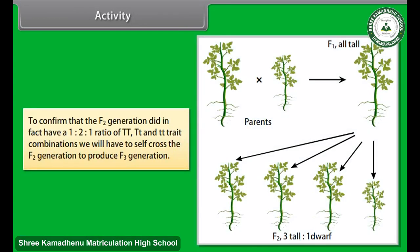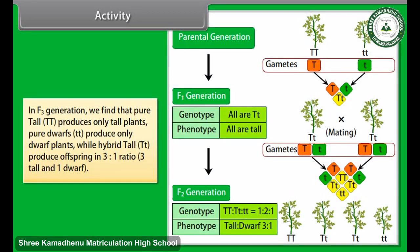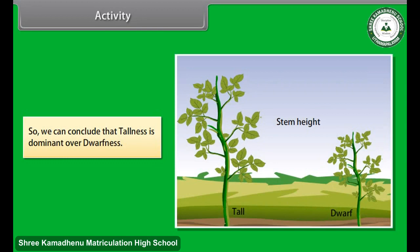Activity: To confirm that the F2 generation did in fact have a 1:2:1 ratio of TT, Tt, and tt trait combinations, we self-cross the F2 generation to produce the F3 generation. In F3, pure tall (TT) produces only tall plants, pure dwarf (tt) produces only dwarf plants, while hybrid tall (Tt) produces offspring in a 3:1 ratio — 3 tall and 1 dwarf. We can conclude that tallness is dominant over dwarfness.